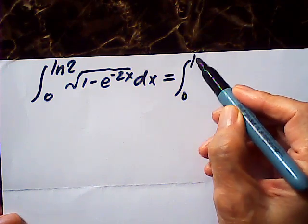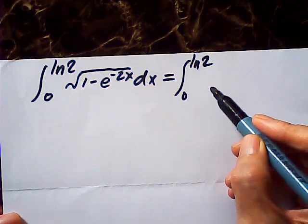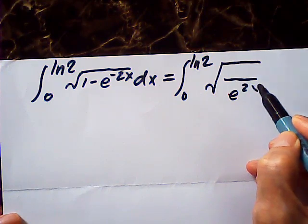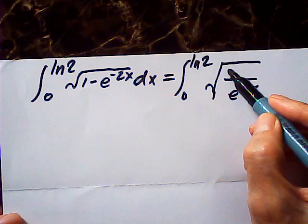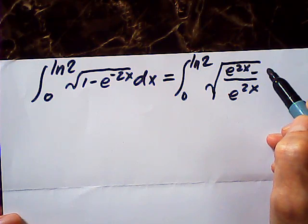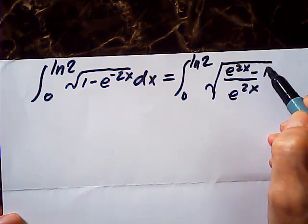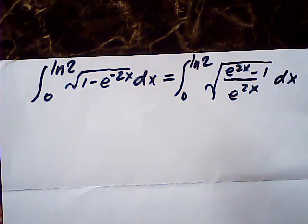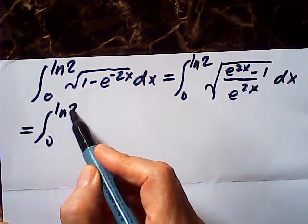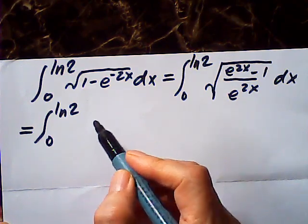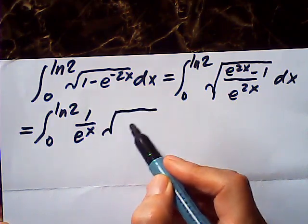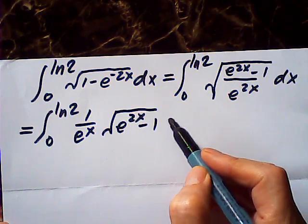The integral goes from 0 to log 2. This integral could be written as e to the 2x over e to the 2x minus 1, and dx. This simplifies to 1 over e to the x times the square root of e to the 2x minus 1, dx.